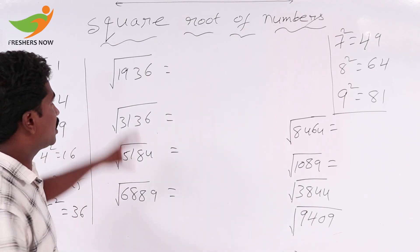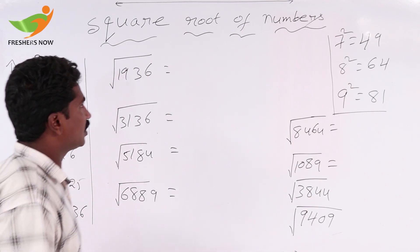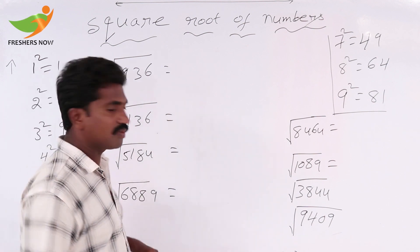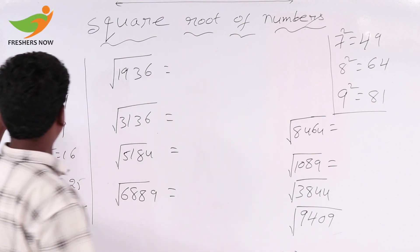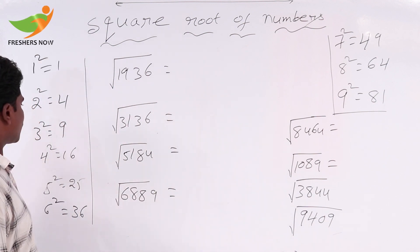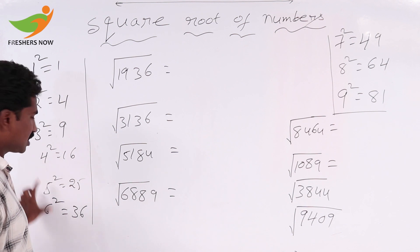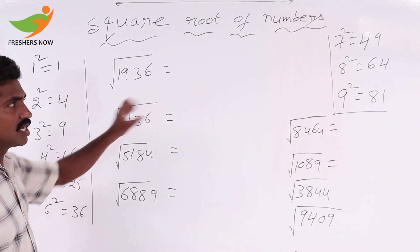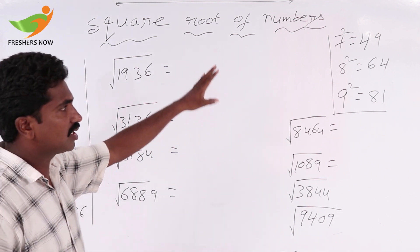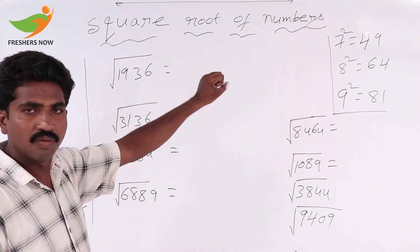Now we discuss square root of numbers. Here: 1 squared is 1, 2 squared is 4, 3 squared is 9, 4 squared is 16, 5 squared is 25, 6 squared is 36, 7 squared is 49, 8 squared is 64, 9 squared is 81. We know up to here.